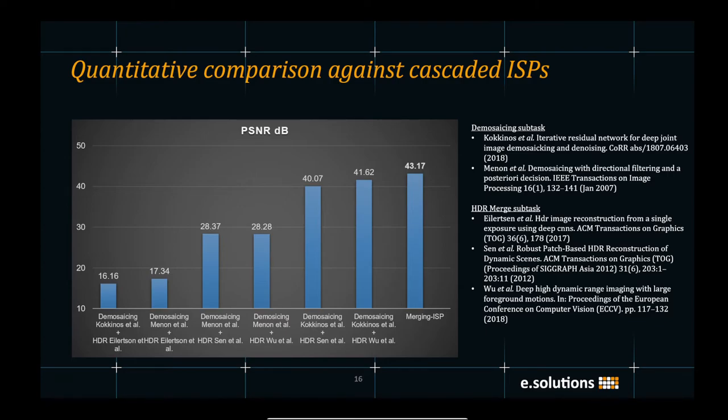Also, the non-learning-based demosaicing method from Menon generates error and that is propagated along the pipeline and enhanced by the HDR-merging methods. Using the state-of-the-art data-driven method by Kokinos for demosaicing yield considerably good results. However, our merging ISP achieves state-of-the-art results out of all the cascaded ISPs.